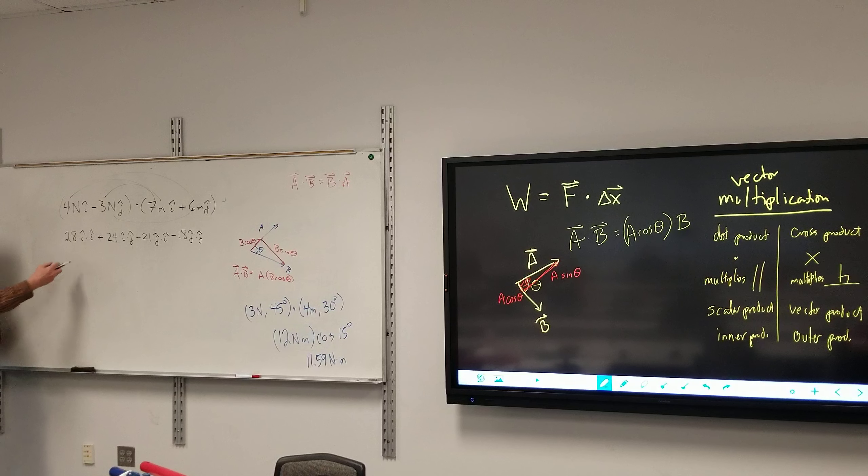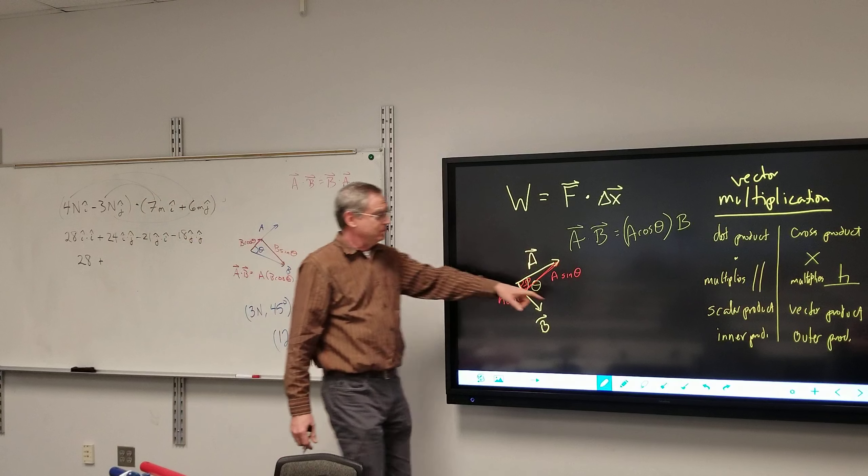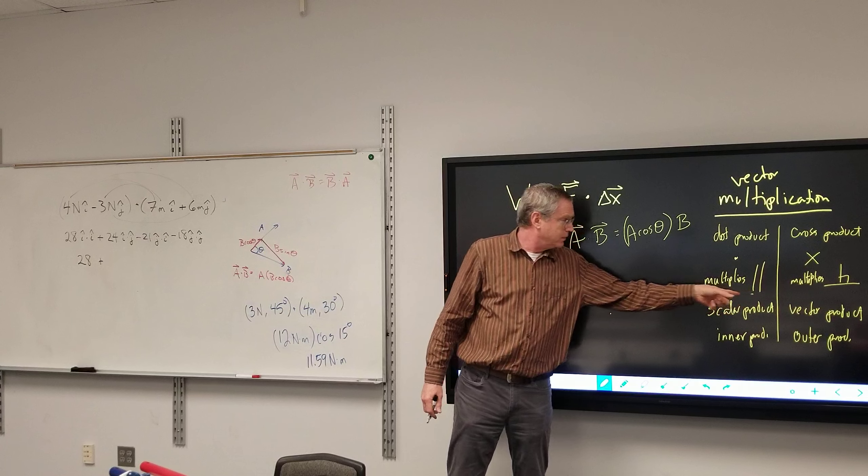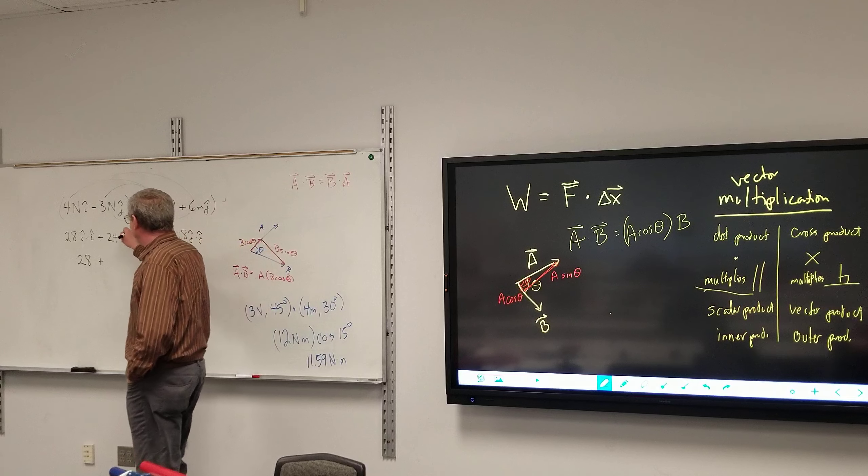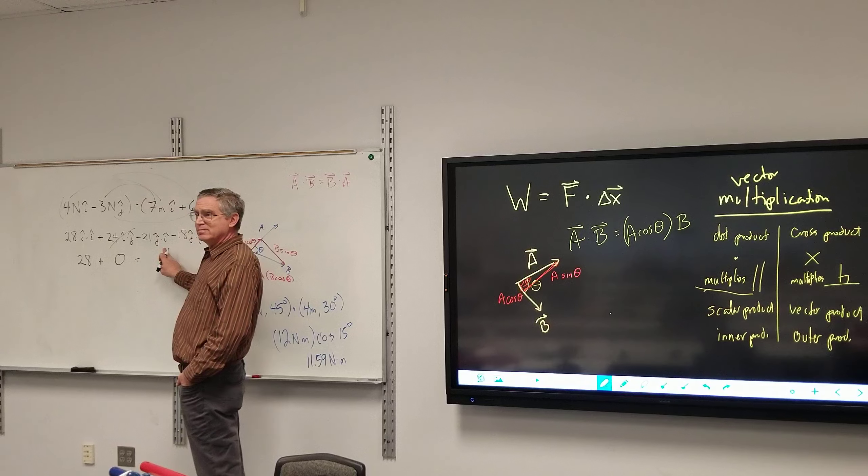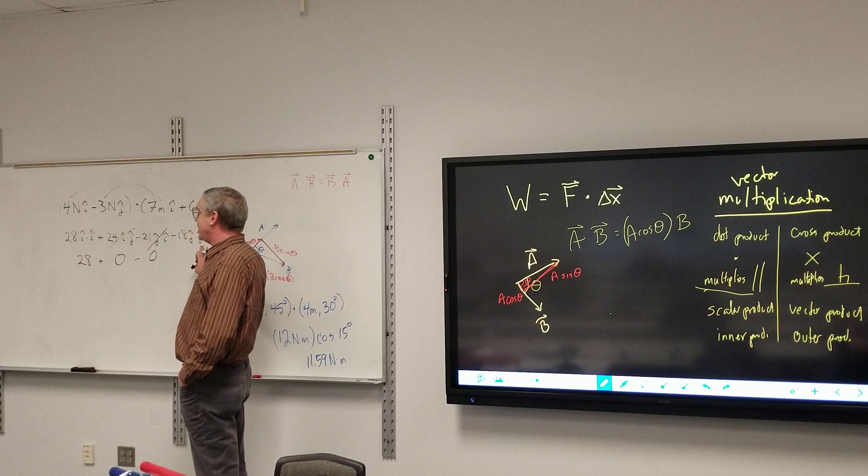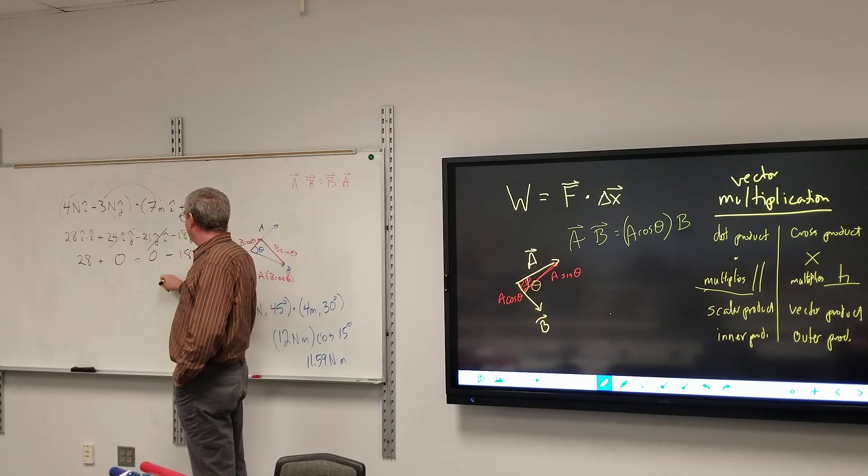So that's just 28 plus I hat dot J hat. The word I heard was not right - what is the relative direction between them? They're perpendicular to each other. Dot product multiplies parallel parts. There's nothing parallel there so that is zero. Zero plus J dot I, and then J dot J equals one. So the answer to this would be 10 Newton-meters.